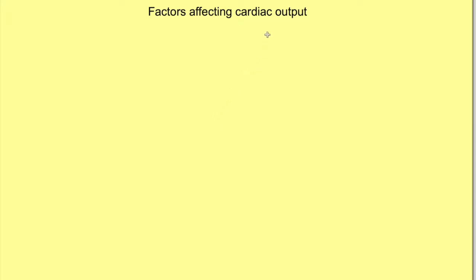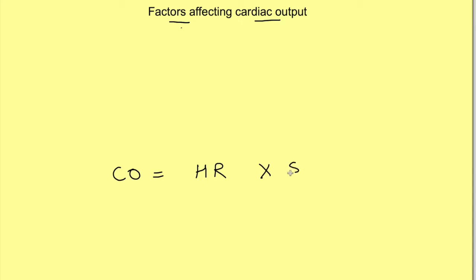Hello friends, let us discuss the factors which affect the cardiac output. So let's start with this equation and see what are the factors affecting the cardiac output. Anything which increases heart rate and increases stroke volume will increase the cardiac output.